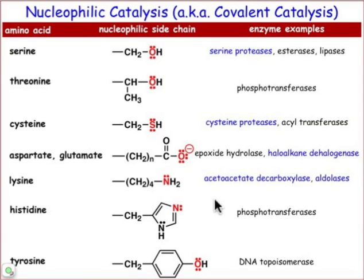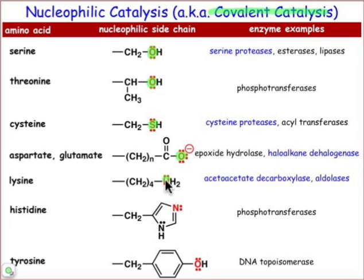We've already seen how the amino acid side chains can function as general acids and general bases. Here we'll take a look at an example where an amino acid side chain functions as a nucleophile in nucleophilic catalysis. The different amino acids that can function in nucleophilic catalysis are shown here. It's sometimes called covalent catalysis, because each of the atoms highlighted in these side chains are able to form a covalent bond with the substrate that they react with.